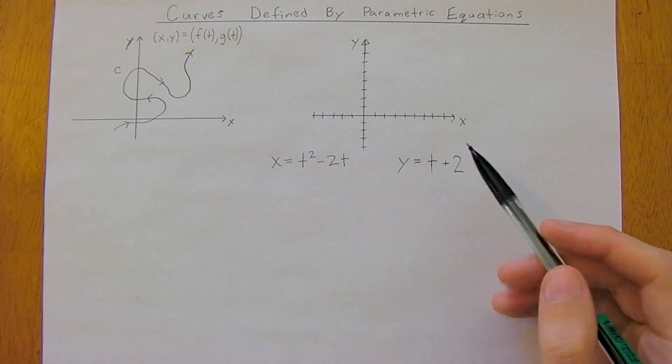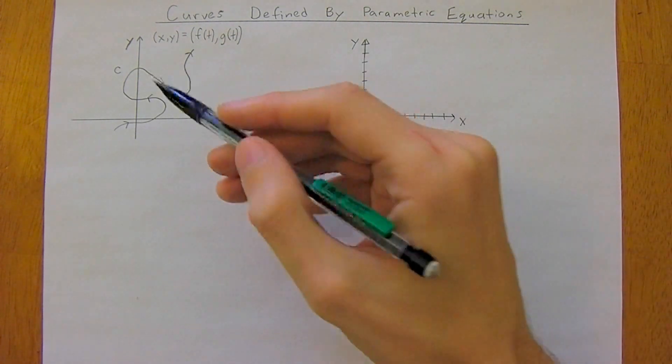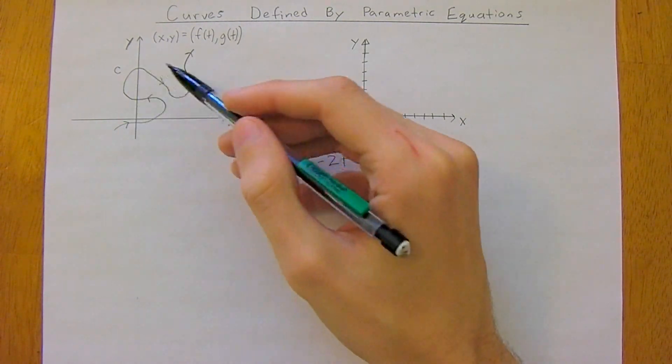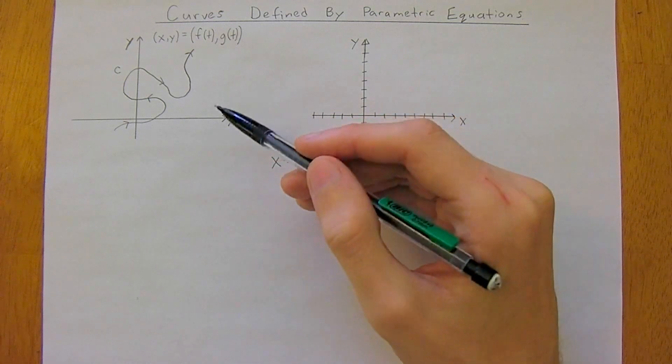We're going to start by discussing curves defined by parametric equations. I'd like you to consider this example. You may notice that this curve here, curve C, fails the vertical line test.